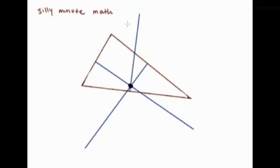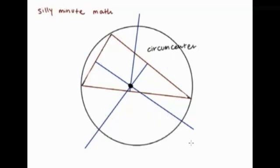This one is called the circumcenter. If you draw a circle, it connects with all three vertices of the triangle. This is the center of the outside circle - that's why it's called the circumcenter.